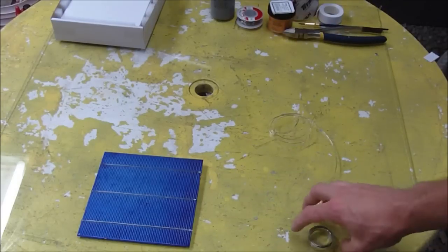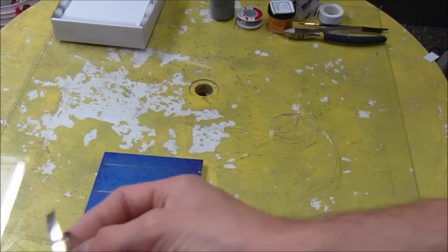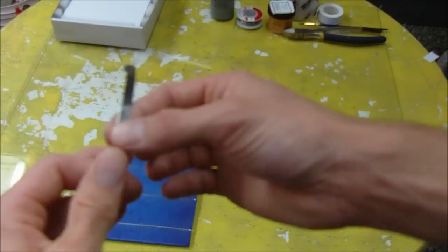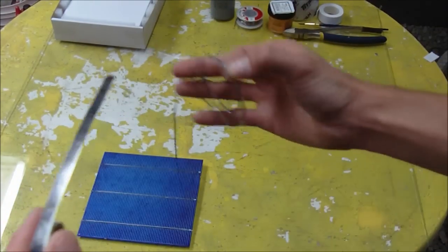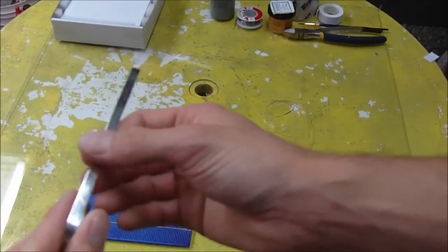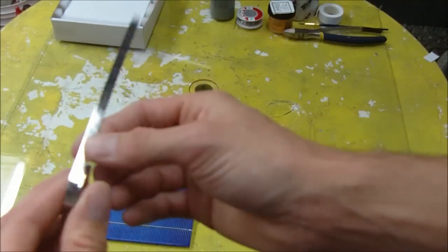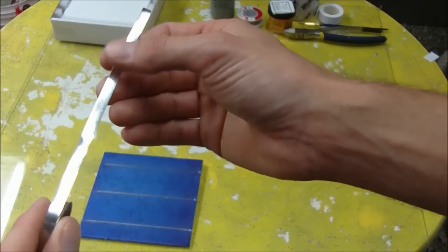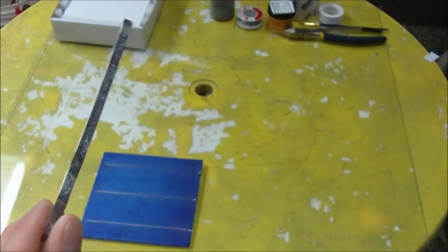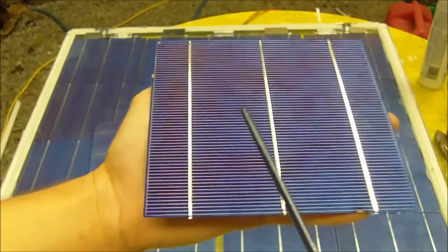This here is the bus bar wire. This is a heavier wire, similar to the tabbing wire, but it's used for making the bus bar connections. This is where you tie all your cells together to build your series circuit.